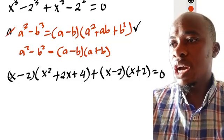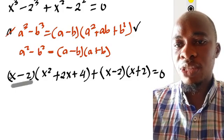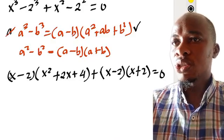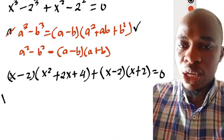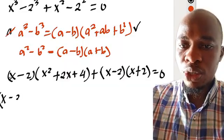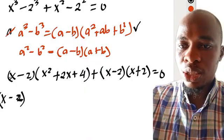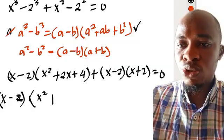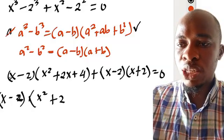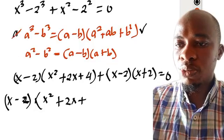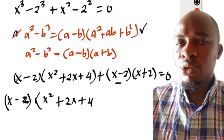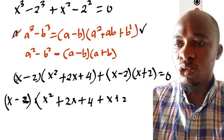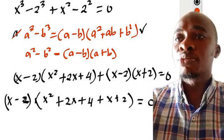When you look at this, you can see we have something common — here we have x minus 2, and here we have x minus 2. So it's common and we're going to take it out. We're going to have x minus 2 into bracket x squared plus 2x plus 4 plus x plus 2, then equals 0.